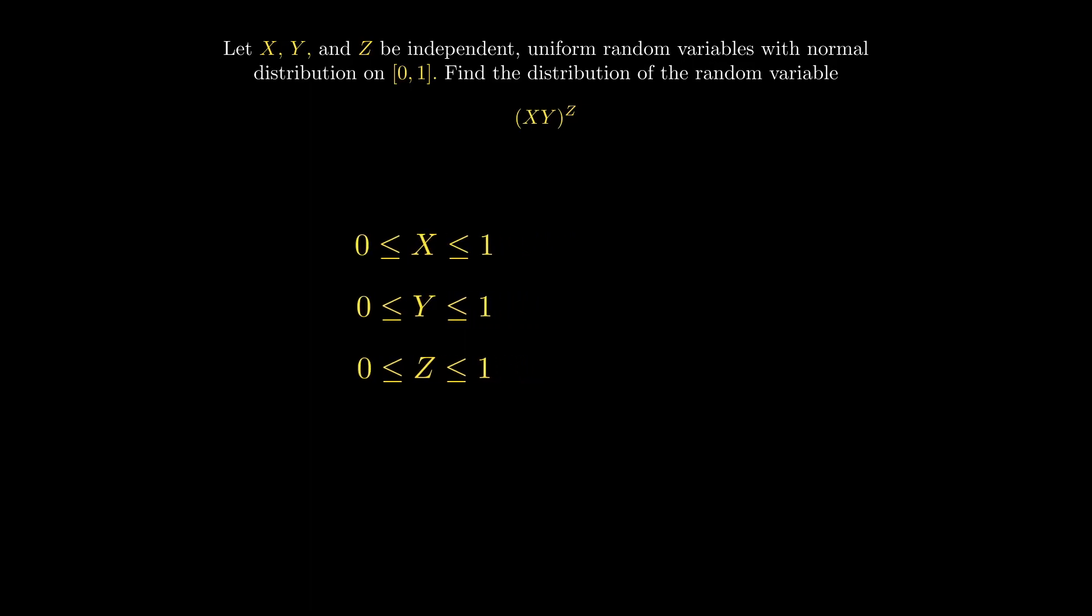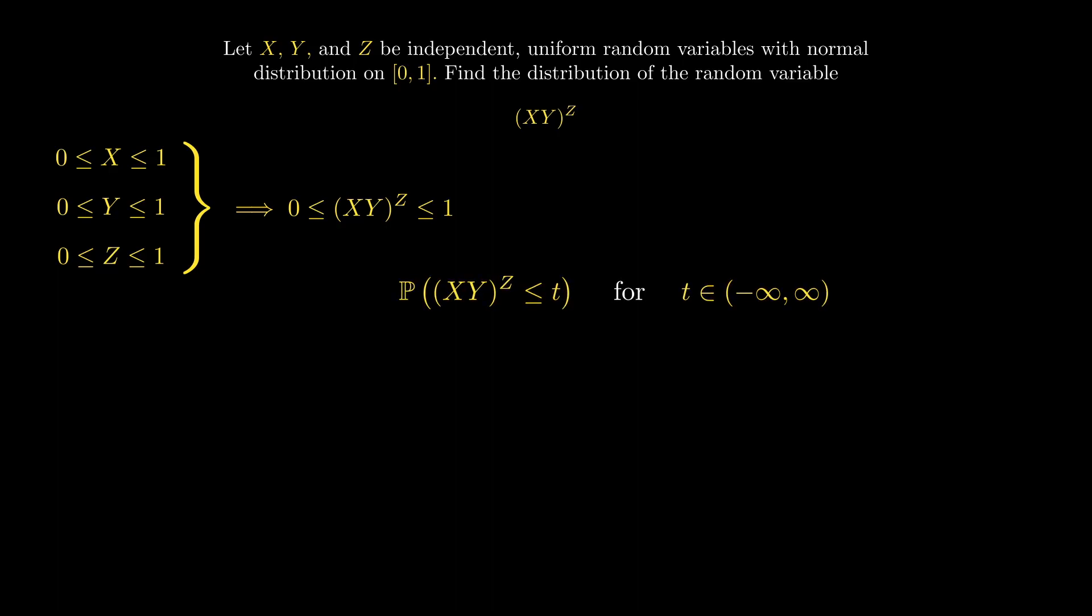From there, it follows that XY^Z must also be between 0 and 1. Remember, since we're trying to find the distribution of this random variable, we're interested in finding the probability that XY^Z is less than or equal to t for any t on the real line.